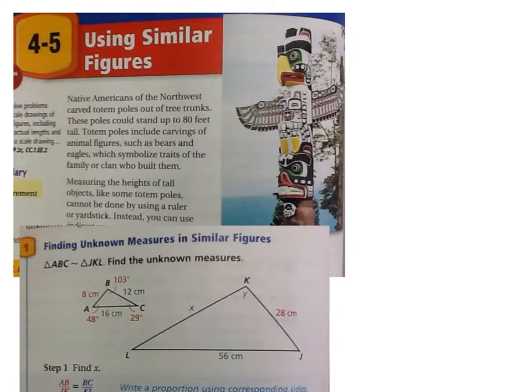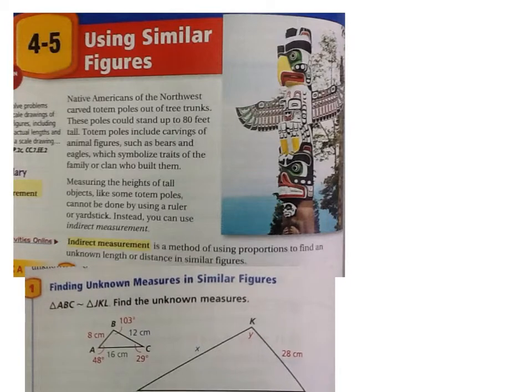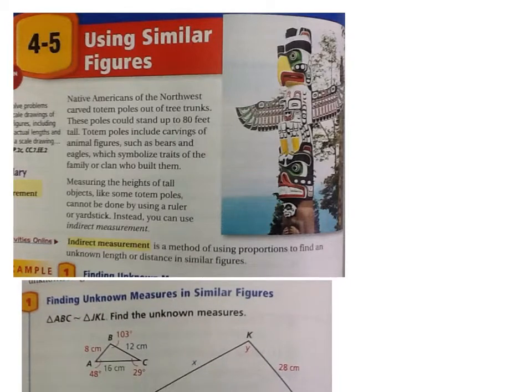Okay, today we're doing similar figures. I'm recording. It says Native Americans of the Northwest carved totem poles out of tree trunks. These poles could stand up to 80 feet tall. Totem poles include carvings of animal figures such as bears, eagles,